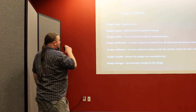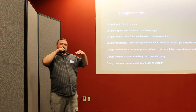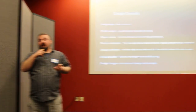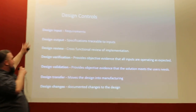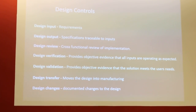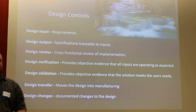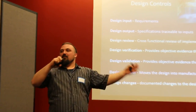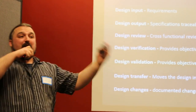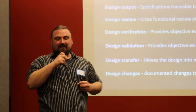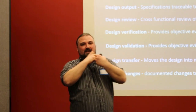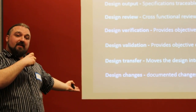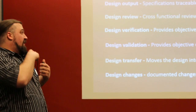I want to point something out: like most companies, your requirements are really the control point for how much work or churn your development team is going to have. This structure is set up to work well with long-running government-style projects. But in the modern age we all want to be lean and agile — we want to release quickly. So we run into a problem because the way regulated bodies want us to operate really kind of collides with the way we want to operate.